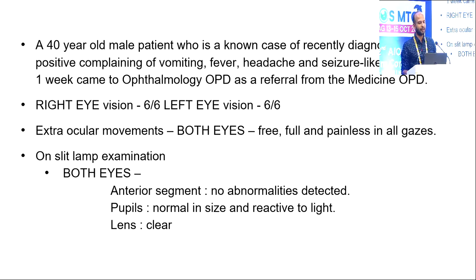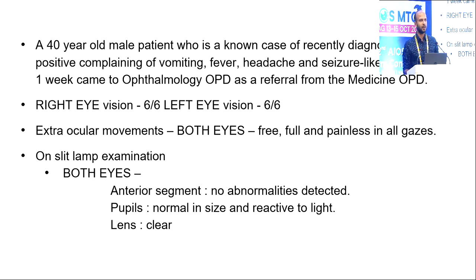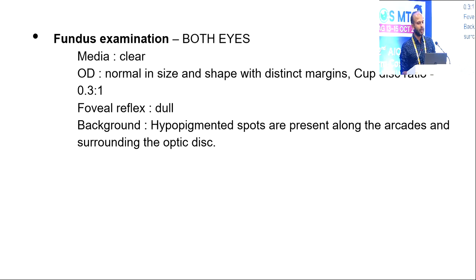Right eye visual acuity 6/6, left eye visual acuity 6/6. Extra-ocular movements in both eyes are free, full and painless in all gazes. On slit lamp examination, both eyes anterior segment show no abnormalities detected. Pupils are normal in size and reacting to light. Lens clear.